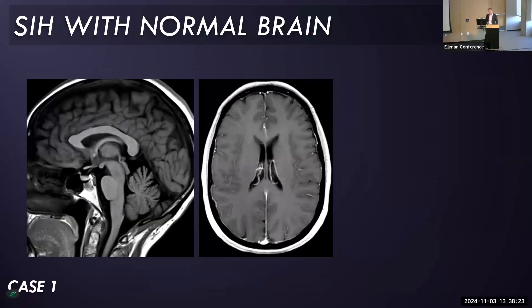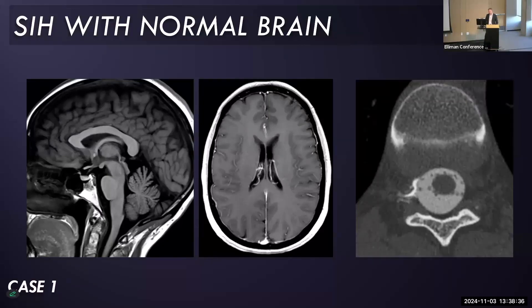This is another patient — no transverse sinus abnormality, no brain sagging, no dural enhancement. I think this really was normal brain imaging, but this patient also had a CSF leak. On the myelogram you can see a small dural tear laterally in the mid-thoracic spine.